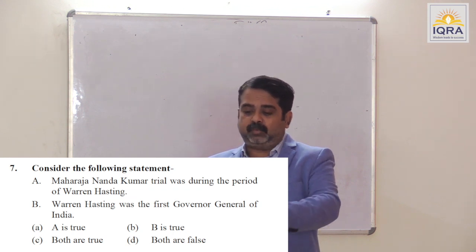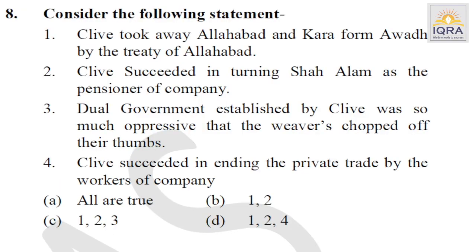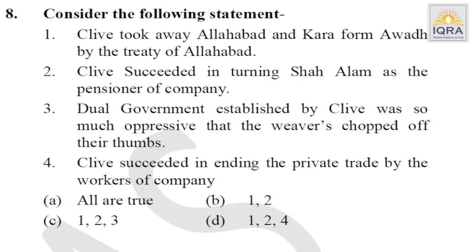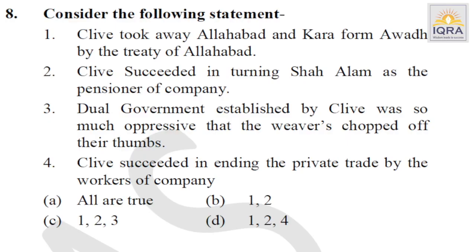Clive took away Allahabad and Kara by the Treaty of Allahabad — true. Clive succeeded in turning Shah Alam as the pensioner of the company — true. Dual government established by Clive was so oppressive that the weavers chopped off their thumbs — true. Clive succeeded in ending private trade by workers of the company — true. All are true.